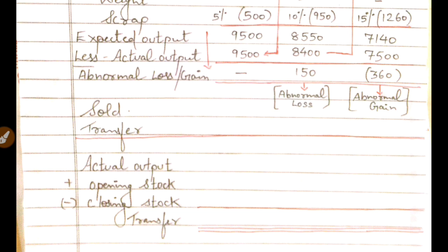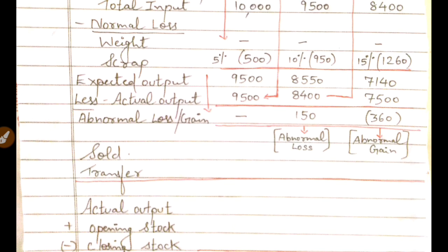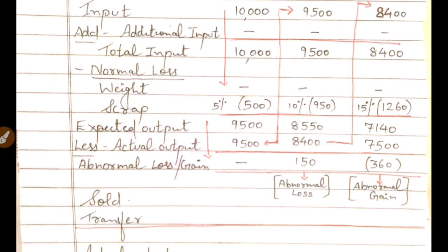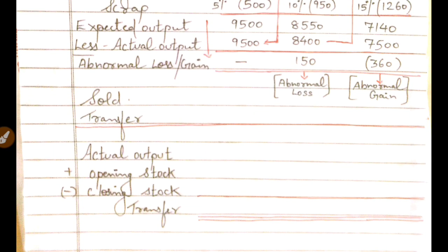For the stock level variety, you write: actual output plus opening stock minus closing stock, and that gives you the transfer amount. The three types of questions important from an exam point of view are: Number 1 — Normal level with abnormal loss/gain; Number 2 — Sold-or-transfer with a given percentage applied to actual output; Number 3 — Stock level, which is slightly lengthy.